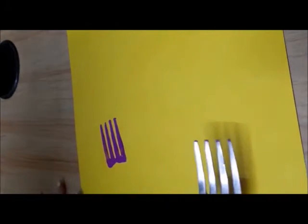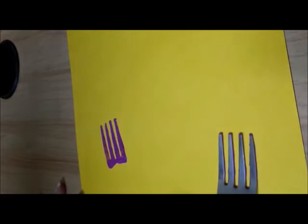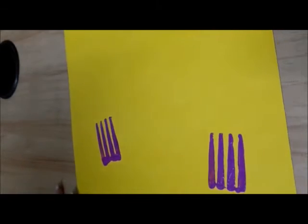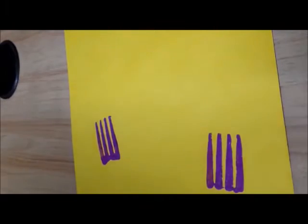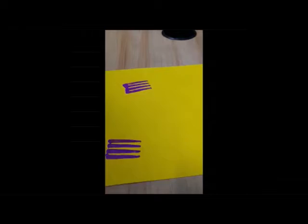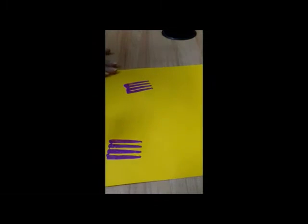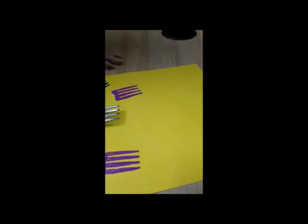We will make another impression on the other side like this. Now we will wipe our fork with our rag cloth and take another color. We will take the next color and make the fork impression, one here and the other here.